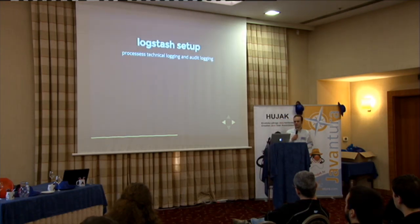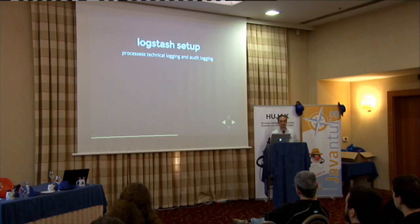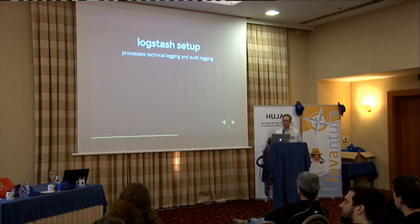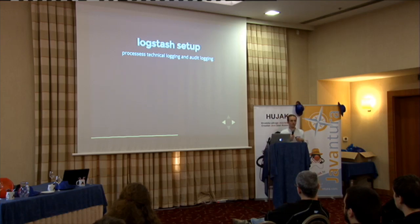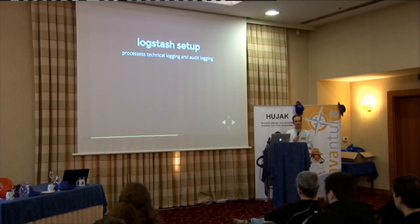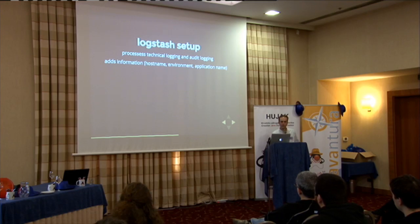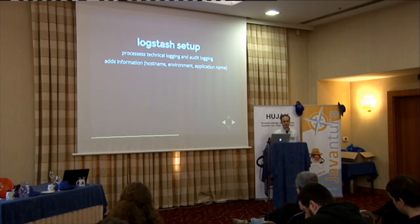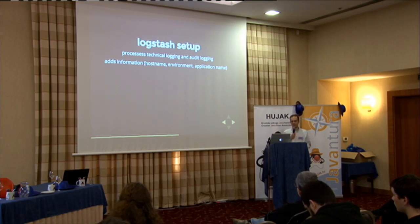If we look at how Logstash is set up, the application we dealt with provides two kinds of log files: a technical log file with exceptions and stack traces, and a so-called audit log file that provides a log entry for every transaction that has been authorized or created. The audit log is very interesting because it contains a lot of detail, but that also makes it dangerous because these details are not always allowed to be displayed in a monitoring system. We let Logstash read both log files and add information like the host name, the environment — whether it's acceptance or production — and the actual name of the application.